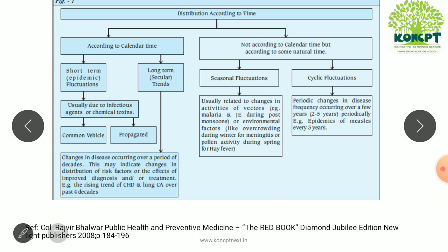When we distribute diseases according to calendar time, there are short-term fluctuations and long-term fluctuations. Long-term fluctuations are called secular trends, whereas short-term fluctuations are called epidemics.